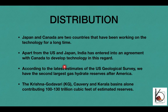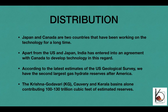Apart from the US and Japan, India has entered into an agreement with Canada as well. It is believed that India has huge reserves of gas hydrates, which is why India is collaborating with these countries. According to the latest estimates of the US Geological Survey, India has the second largest gas hydrate reserve after America — this can be asked in prelims. In India, reserves are found in the Krishna Godavari, Kaveri, and Kerala basins, and near Andaman and Nicobar, with an estimated 100 to 130 trillion cubic feet.